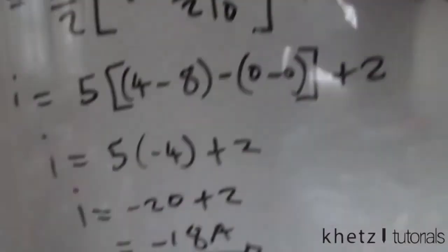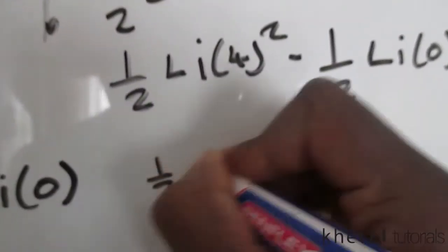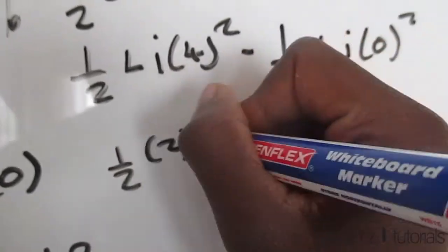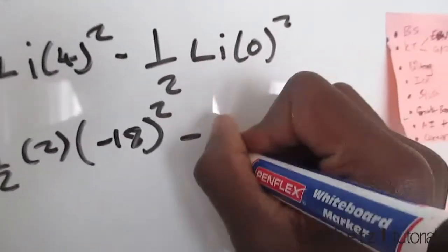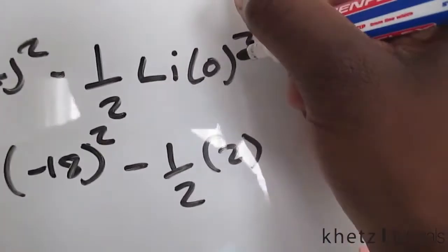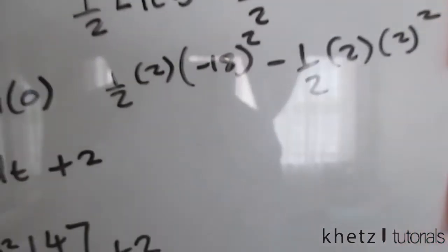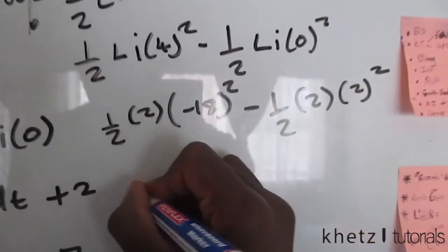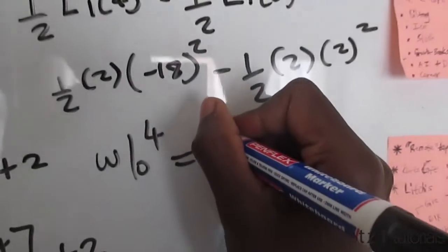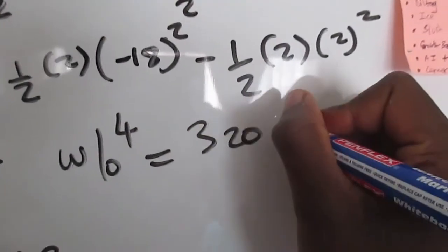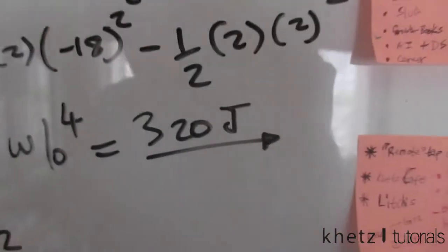Now that we found the current at time 4 which is negative 18, half L which is 2 and then multiply by negative 18 squared, minus half L which is 2 and i at 0 which is 2 as well, squared. Now punching this into a calculator should give you w at 4 as equals to 320 joules. And that is how you solve this particular problem.